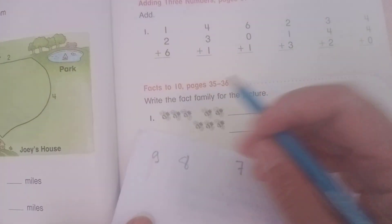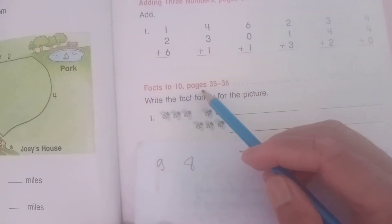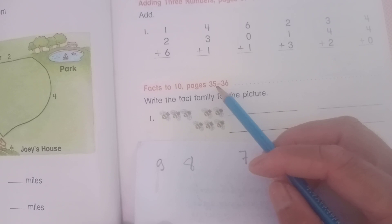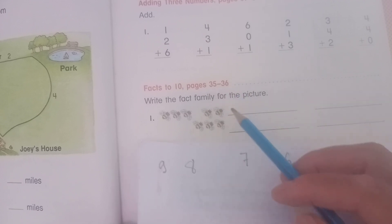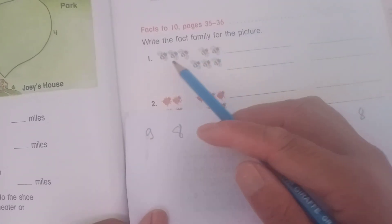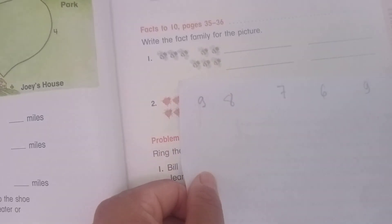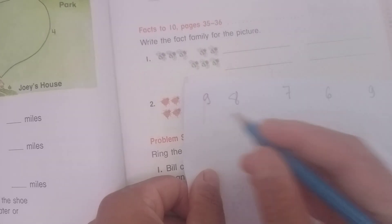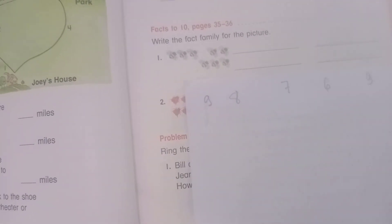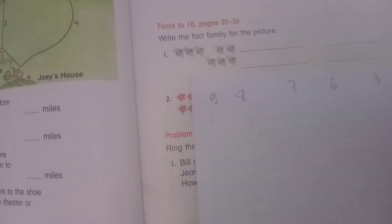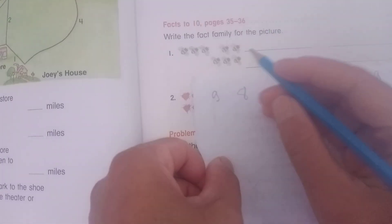So now 4+4=8. And you can see, so I only make this first to ten, and page 55 to page 35 to page 36, okay? So write a family for the picture. Number one, you can see...